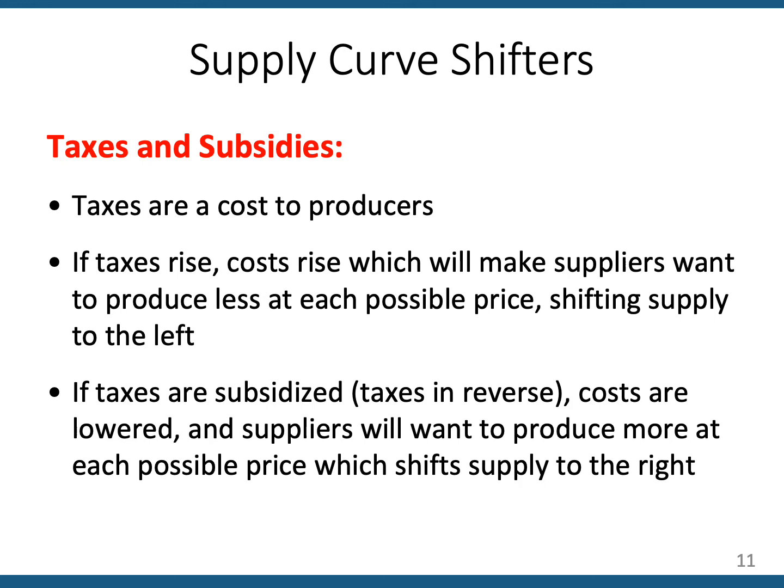A subsidy is like a negative tax — this is where the government subsidizes an industry per unit of the product they're producing. We see this kind of thing in agricultural markets. When that happens, maybe in the form of a tax break or subsidy, it's less expensive per unit to produce your product, and this will lead to an increase in overall supply — shifting the supply curve to the right.